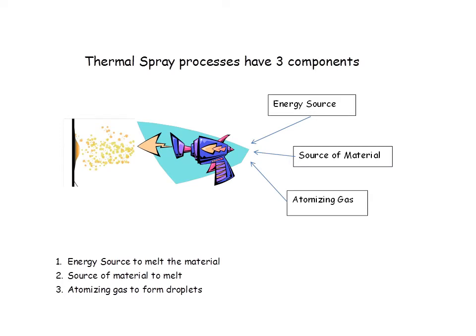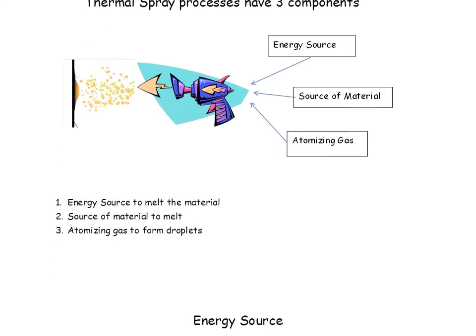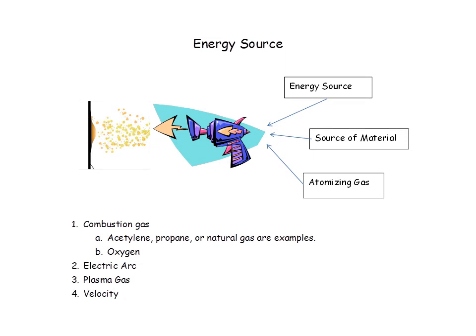Thermal spray processes all have three components: you need an energy source, a source of material, and atomizing gases. The energy source comes from combustible gases such as acetylene or propane, combined with oxygen — the flame combines them to create heat and accelerated gases. Another way to generate energy is through arc, very similar to welding, where an arc occurs between a material and either a welding electrode or a metal wire feedstock used as the electrode. Energy can also be created with a plasma gas or plain old velocity.